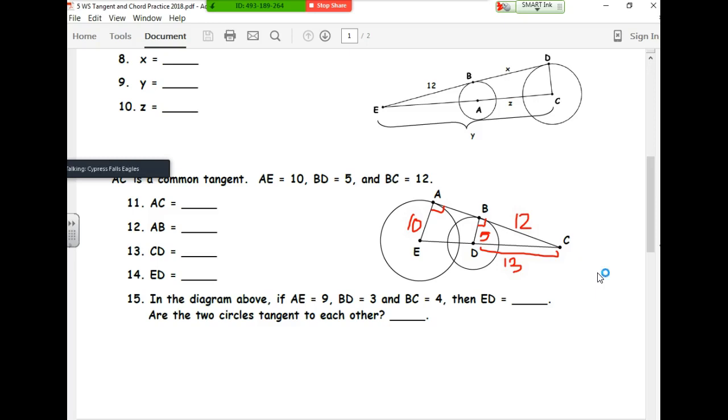Now, you can say 5 is to 10 as 12 is to AC. Or you can just see that the scale factor is 2. Sometimes the scale factor is really nice, and you don't have to do a proportion. 5 doubled is 10, 12 doubled is 24.